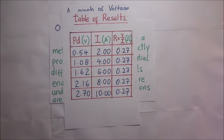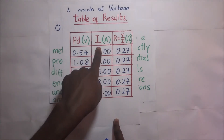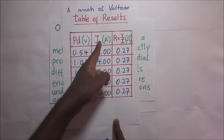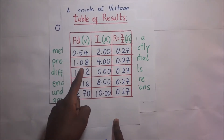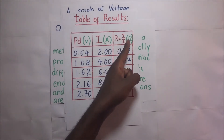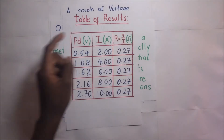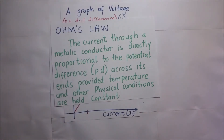Looking at this table of results from an experiment carried out earlier, for every value of current and potential difference, when we divide V by I we get a constant, and this constant is what we are calling resistance. This resistance is measured in Ohms — it was named after the man who found this out. Ohm's law places emphasis on the metal conductor because other materials behave differently.